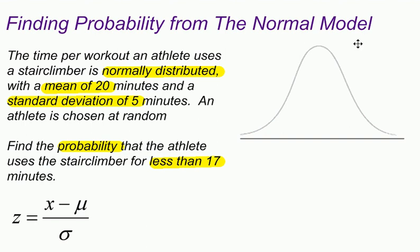So what I'm trying to do is find the probability that my random variable x is less than 17. On my normal model, the mean is always in the middle, so 20 minutes is right here, and I'm concerned with 17 minutes.